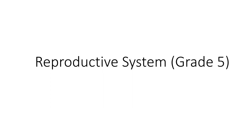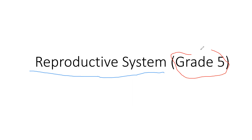Hello everybody, welcome to my channel. Today we are going to be learning about something called the reproductive system. Actually today we are not going to learn everything in full — we are going to learn the grade five version. In the grade five version, we go pretty small, meaning we don't learn everything by heart. We only learn a few things, and the rest we learn in higher grades six and seven.